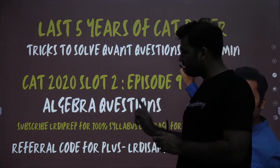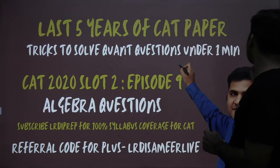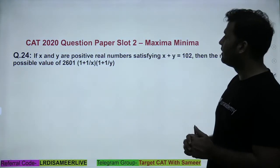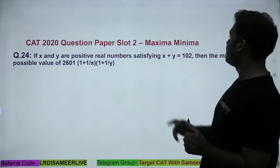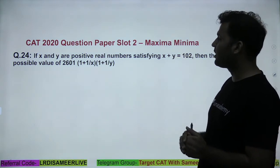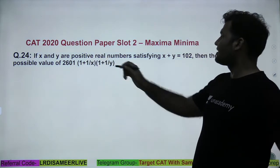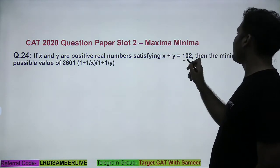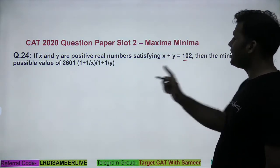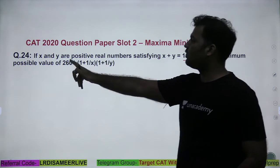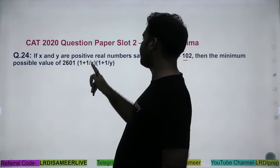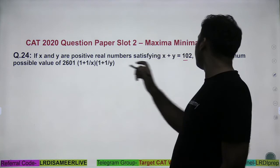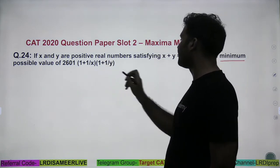In this video I am going to cover all the algebra questions asked in the CAT itself. Look at this question — CAT 2020, a question of maxima and minima. Question number 24: x and y are positive real numbers such that x plus y is equal to 102. Find the minimum possible value of 2601 into (1 + 1/x) into (1 + 1/y).